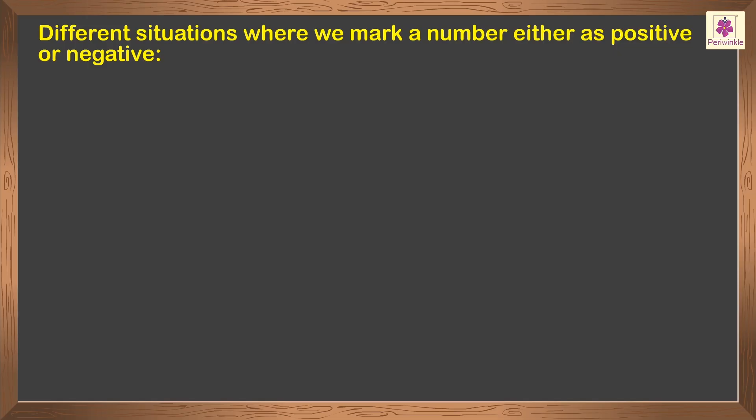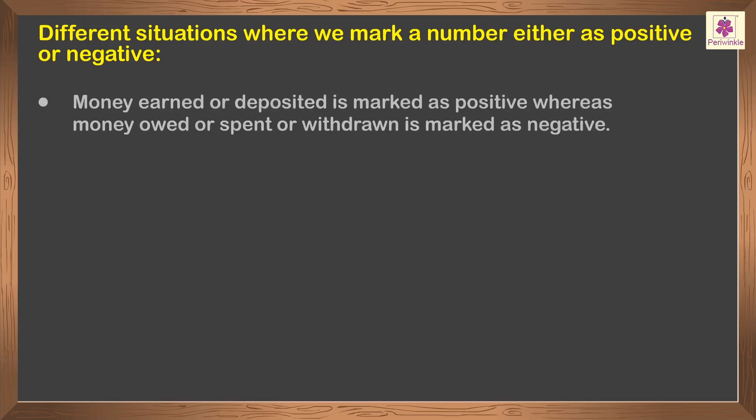Now let us look at different situations where we mark a number as either positive or negative. Money earned or deposited is marked as positive, whereas money owed, spent, or withdrawn is marked as negative.